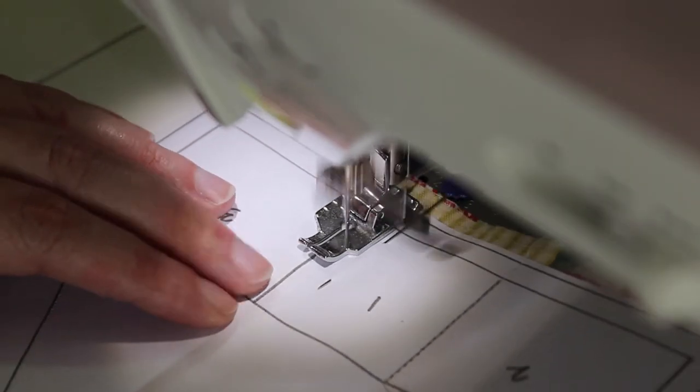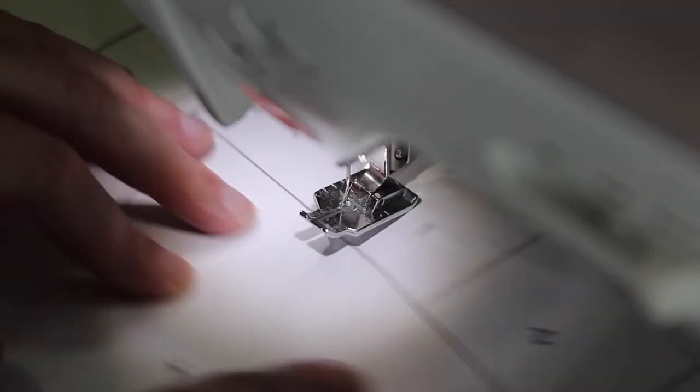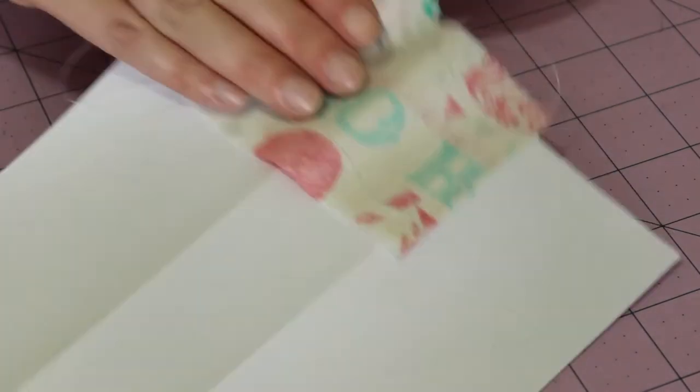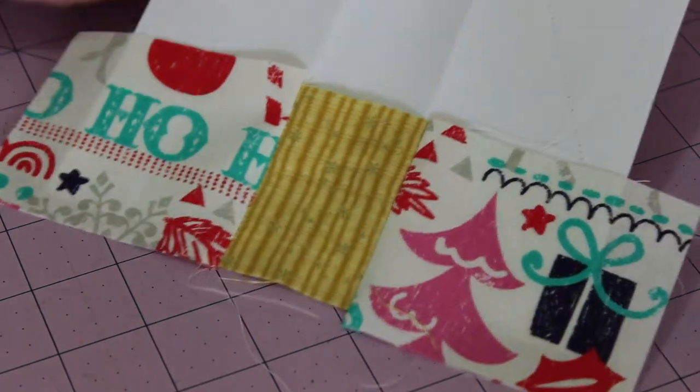Sew on top of the line that separates sections one and three, stopping once you reach the line to section four. And then on the back, firmly press open the seam. And that's the first three sections done.